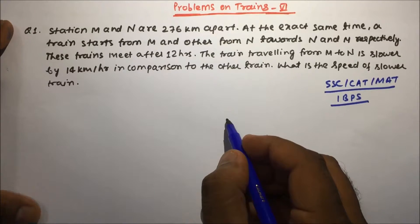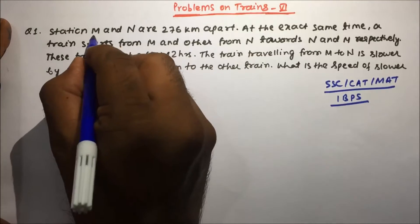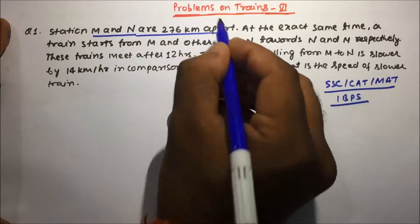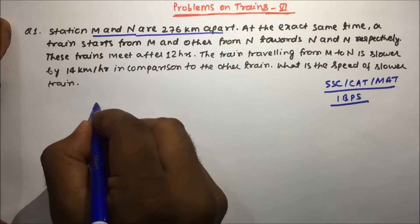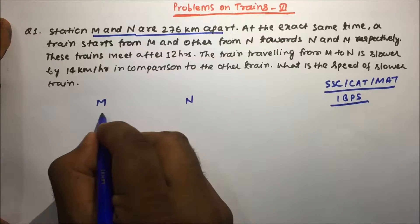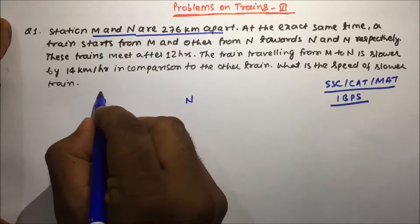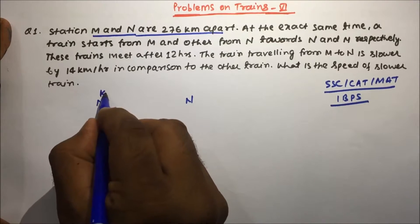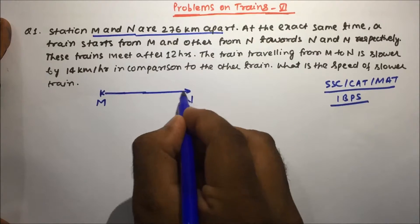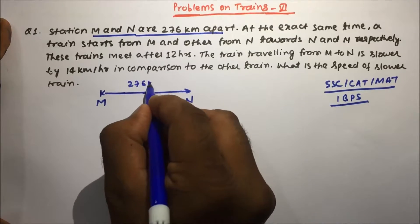Question number 1: station M and N are 276 km apart. This is station M and this is station N, and the distance between both stations is 276 km.